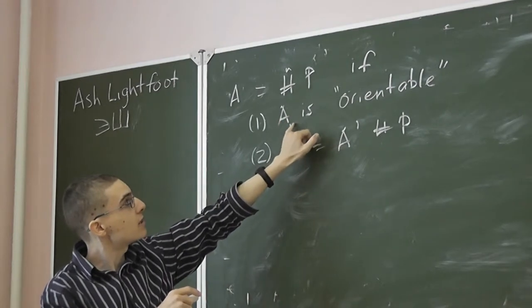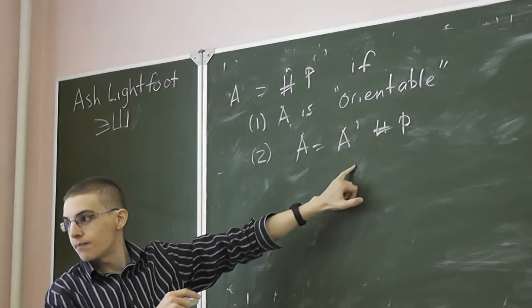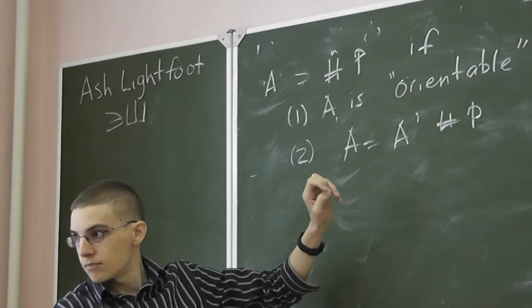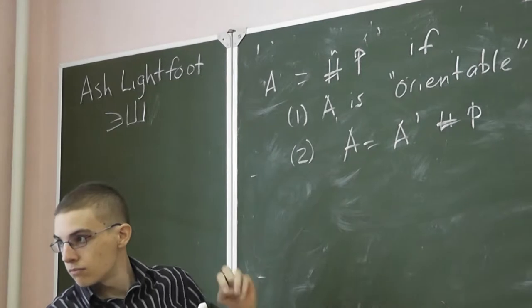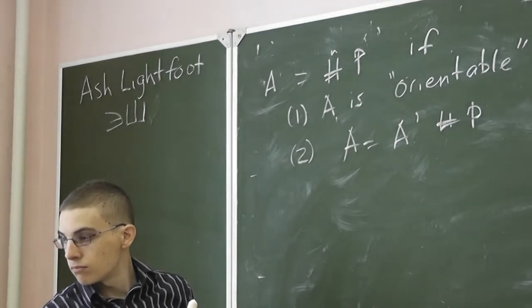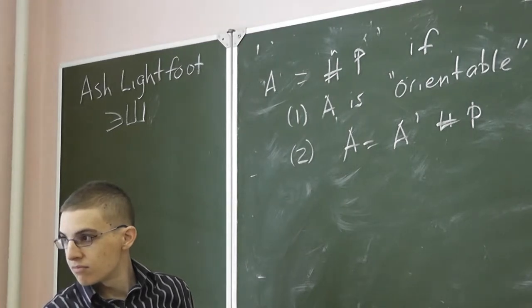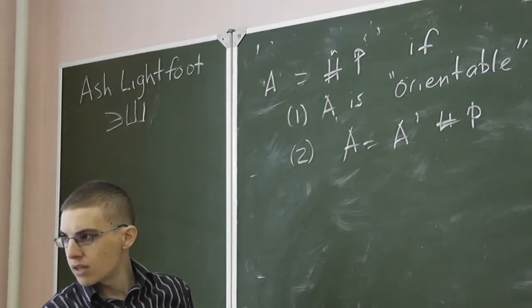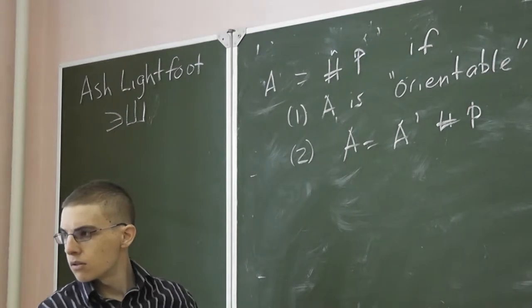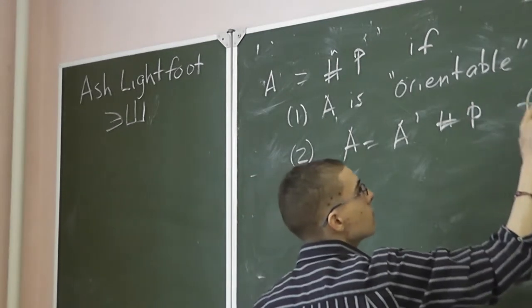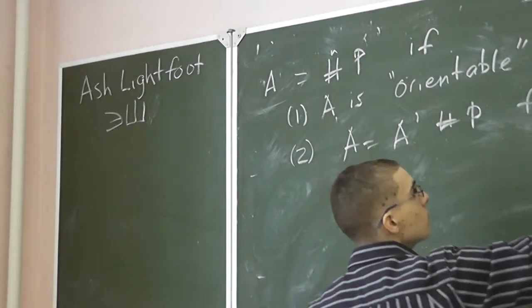The condition here is: A is orientable if we cannot write it as a connect sum with a projective plane — that is, if its word has no AA. Each letter should be used two times: as a letter and as a corresponding inverse direction.